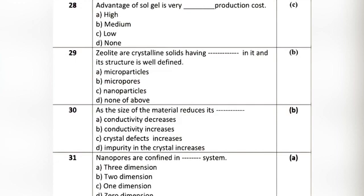Question 7: Nanopores are confined in a — system. Option A: three dimensions. Option B: two dimensions. Option C: one dimension. Option D: zero dimensions. The correct answer is Option A: three dimensions.